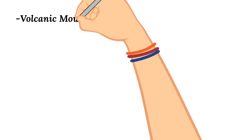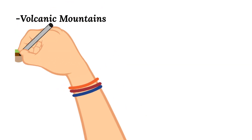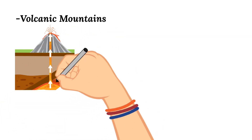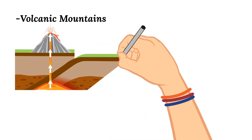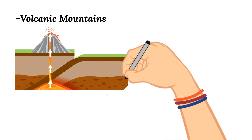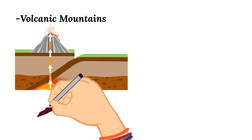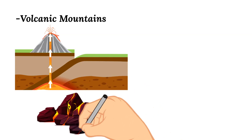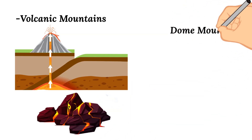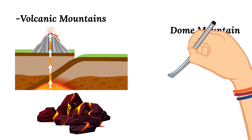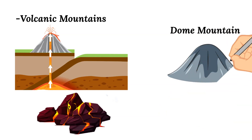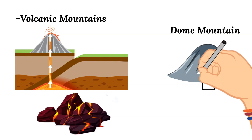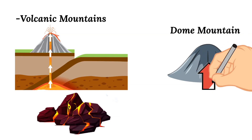Next up are volcanic mountains. These mountains are caused by volcanic activity, and there are two different types of volcanic mountains: volcanoes and dome mountains. Volcanoes are formed when magma erupts and comes all the way to the surface of the earth and breaks through the crust. This magma will then harden on the earth's surface and gradually build up more and more to form a mountain. Dome mountains are typically formed when a lot of magma builds up just below the earth's surface — it doesn't actually break all the way through the crust, but this force presses on the rock above and it bulges out, forming a dome mountain.